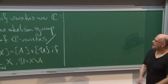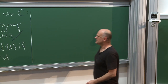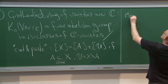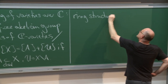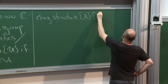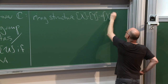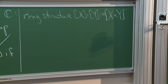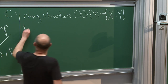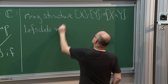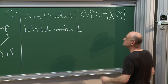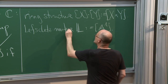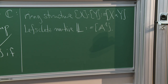That's the cut-and-paste relation: whenever you have a decomposition of a variety into a closed subvariety and its open complement, you require additivity. This is the relation we force on this free abelian group. We also give this a ring structure: multiplication is just given by the Cartesian product of varieties. We introduce the Lefschetz motive L, defined as the motive of the affine line.